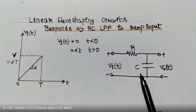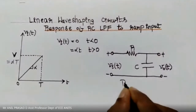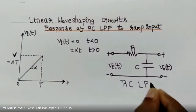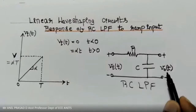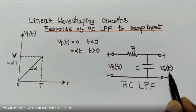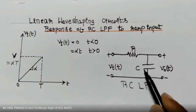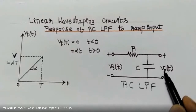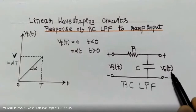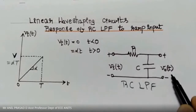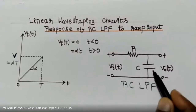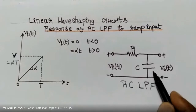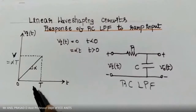When this input is applied to the RC low pass filter circuit, we are interested in finding the output voltage. Our approach is to apply KVL across the circuit, find the Laplace transform on both sides, and then apply the inverse Laplace transform to obtain the expression for v_naught(t), the output voltage across the capacitor.